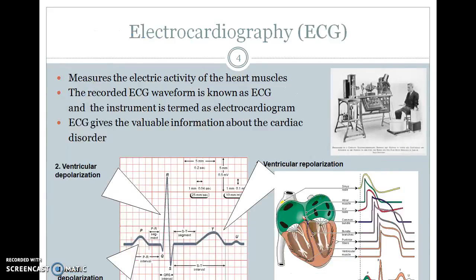Now we are going to see the topic of ECG. We already know what biopotentials and electrodes are. ECG measures the electrical activity of the heart muscles. The recorded ECG waveform is known as electrocardiography, and the instrument that records the waveform is termed an electrocardiogram. The ECG gives valuable information about cardiac disorders.